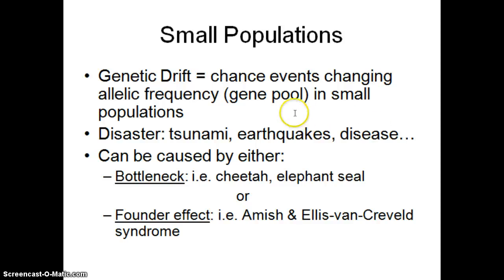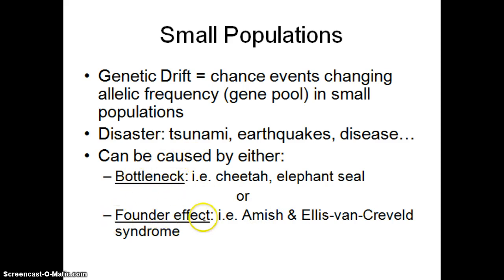Genetic drift is when any chance event causes the gene pool to change significantly in small populations. Those events can be either bottleneck events or founder effects. I'd like you to read about both of those in your textbook and come to class with examples of how those chance events can cause evolution in a small population.